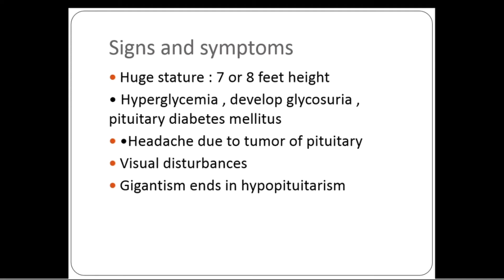These patients grow to seven to eight feet in height — normal adult height is roughly five to five and a half feet. They also present with hyperglycemia, develop glycosuria, and may develop pituitary diabetes mellitus. If a tumor is the cause, patients get headaches and visual disturbances, as the sella turcica is just below the optic chiasma, whose fibers control the visual system.